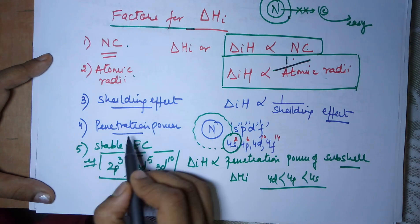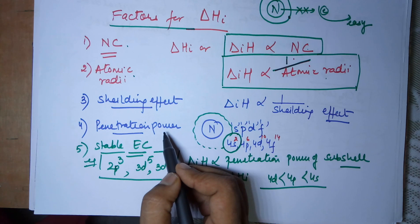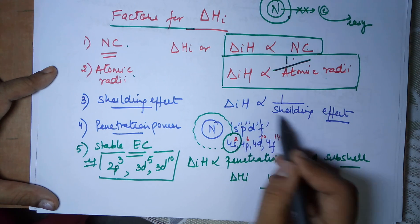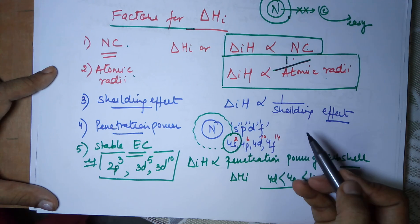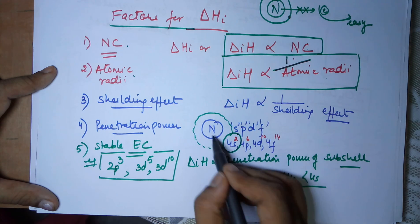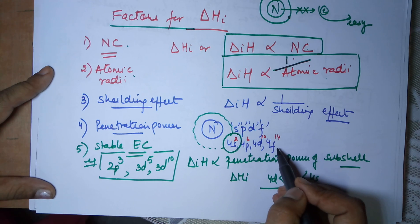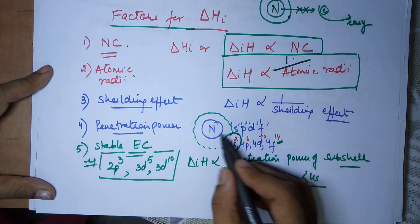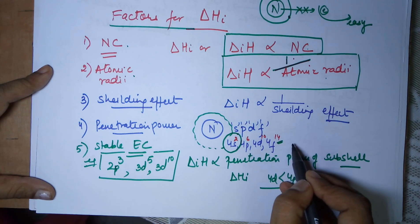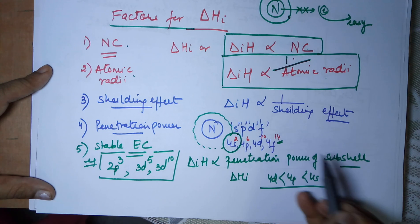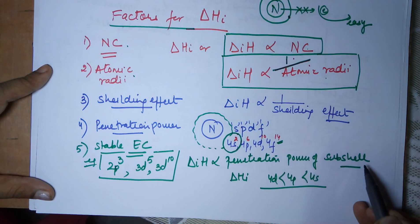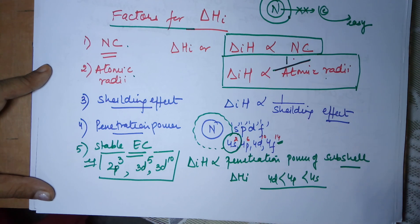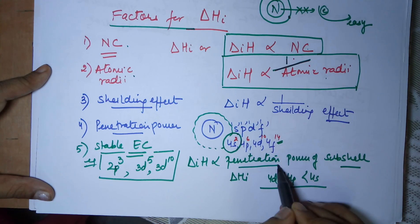The fourth factor is penetration power. Certain subshells are always found closer to the nucleus than others. The order of penetration power within the same shell is: S > P > D > F. So 4S electrons are always closer to the nucleus than 4P, then 4D, then 4F. The easiest electron to remove would be 4F, because 4S is closest and most tightly held. So more the penetration power, the more difficult it is to remove the electron. Hence ionization energy is directly proportional to the penetration power of the subshell.